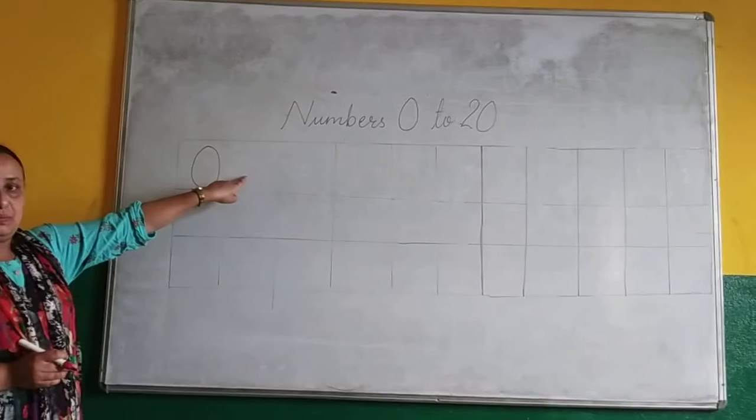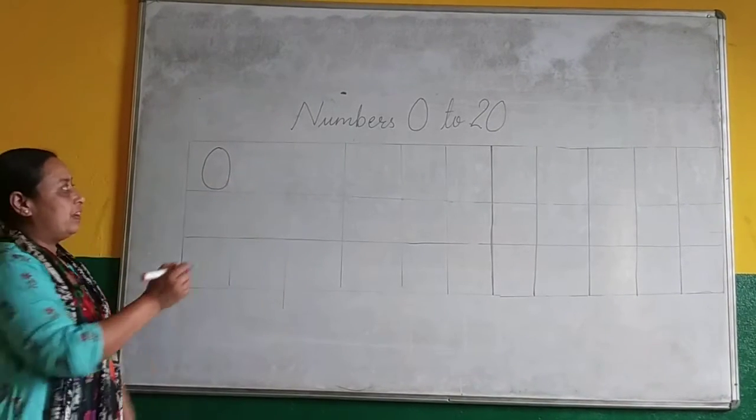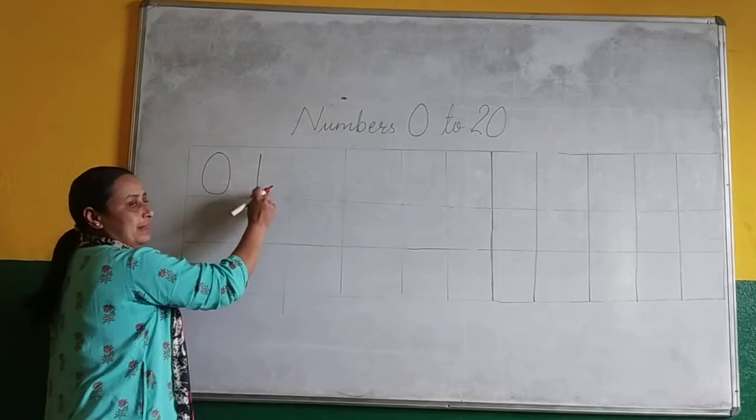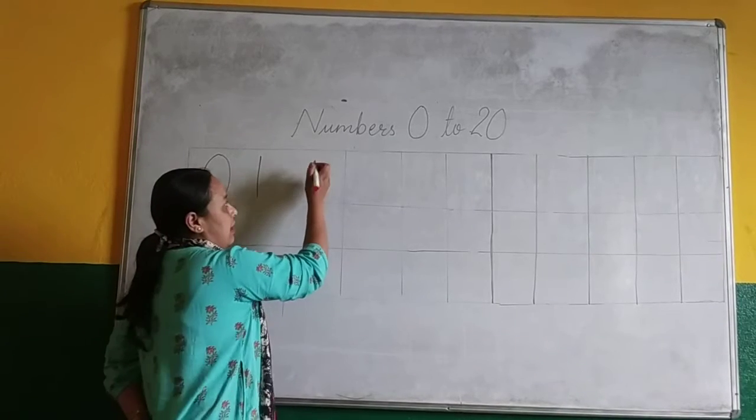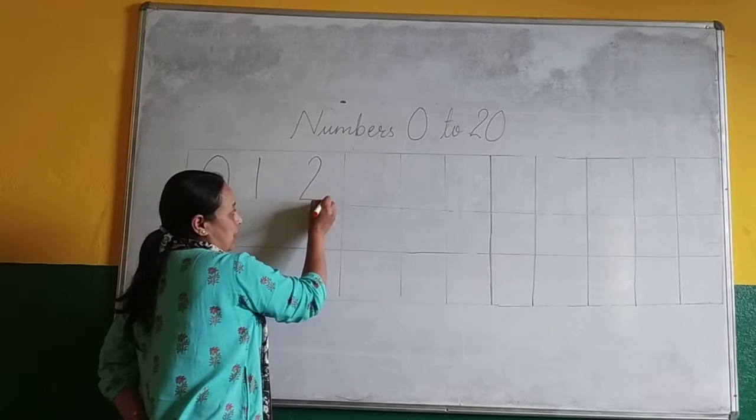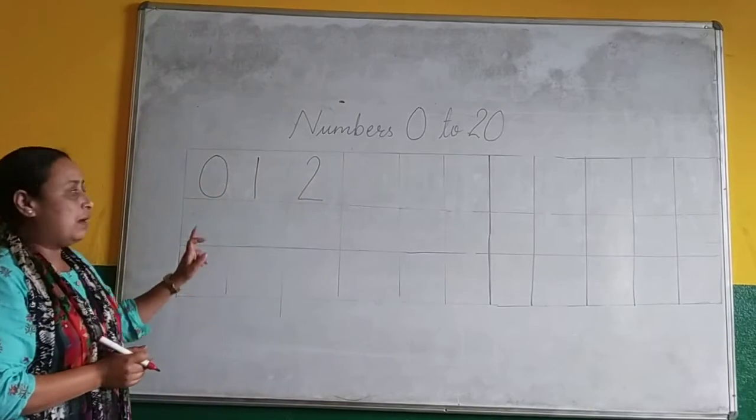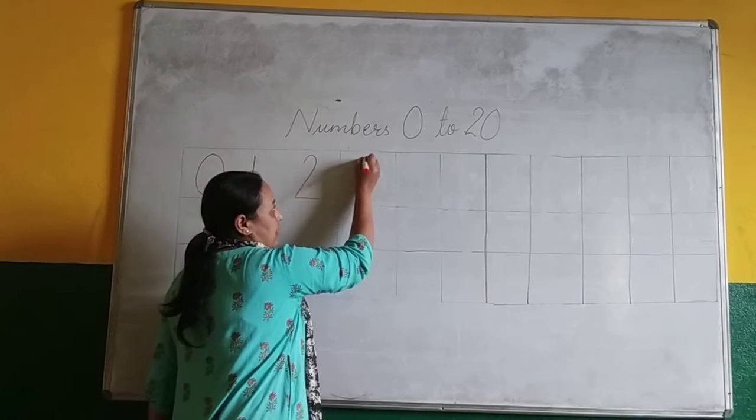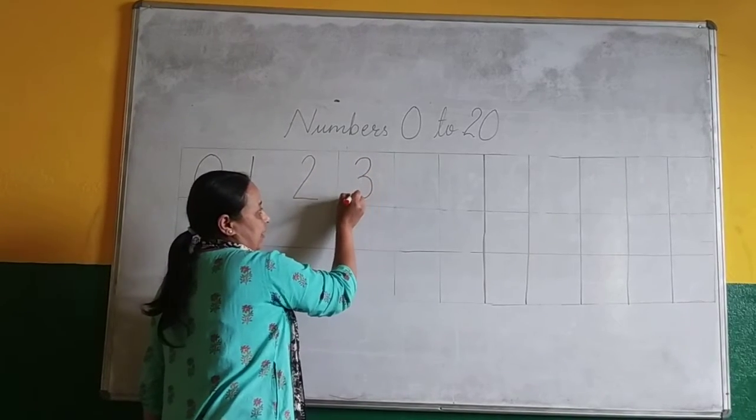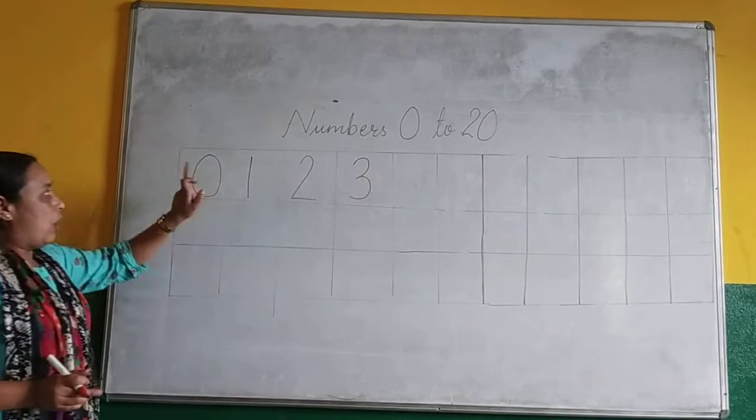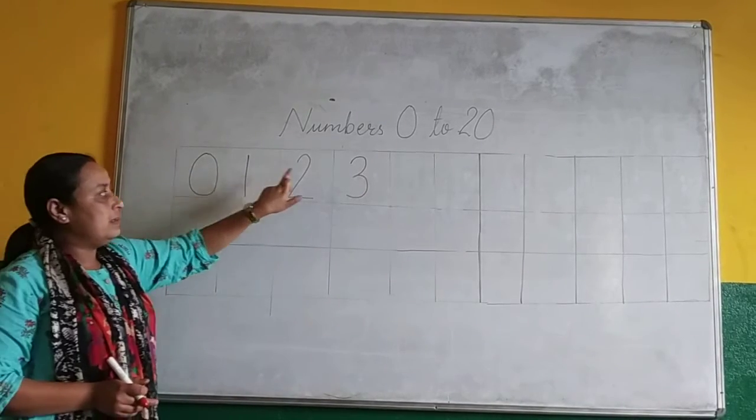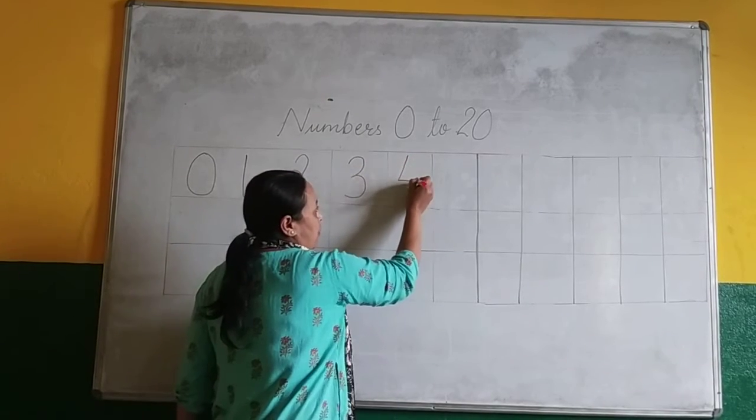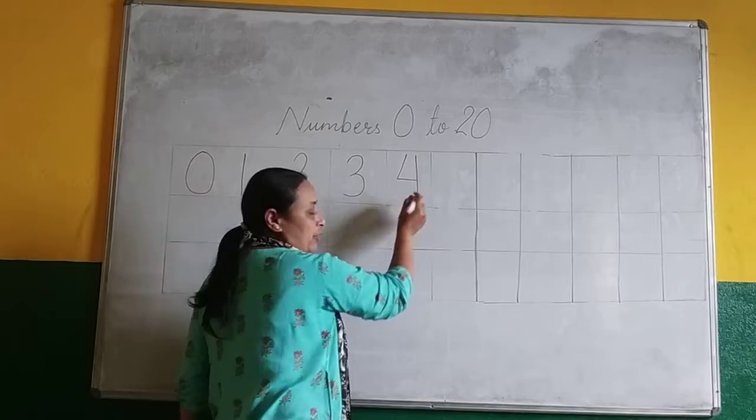Now go to next box. Write down 1. 0, 1, then you write down number 2. Again learn the number. 0, 1, 2. What do you write here? Number 3. Again you will count from 0. 0, 1, 2, 3, 4. Write down 4. Understood? What do you write? 4.